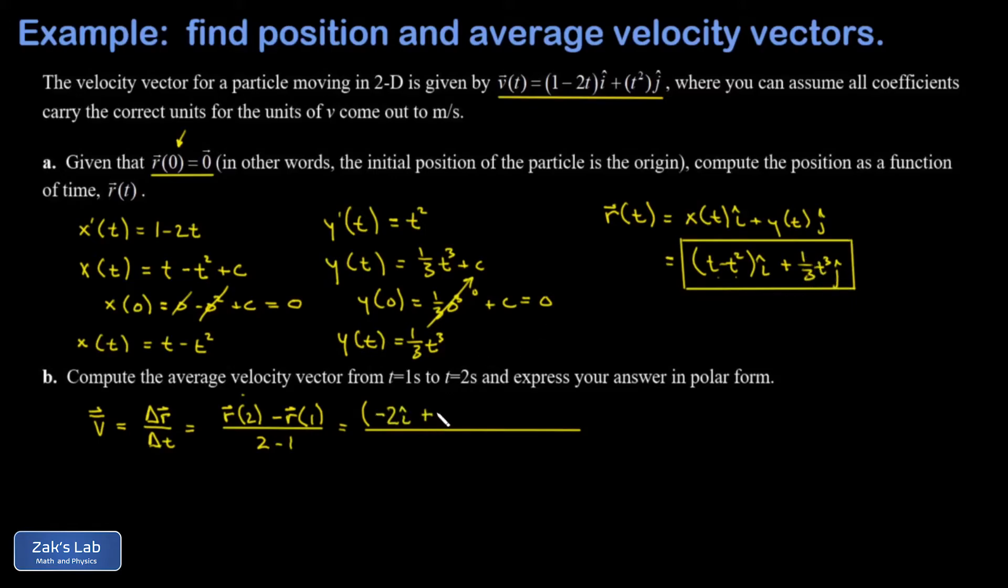And then r of one: when I plug one in for the i hat component I get zero, when I plug one in for t in the j hat component I get one third. So r of one is just a one third j hat, and I'm subtracting that from r of two.